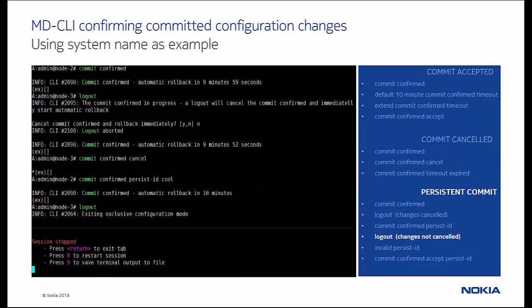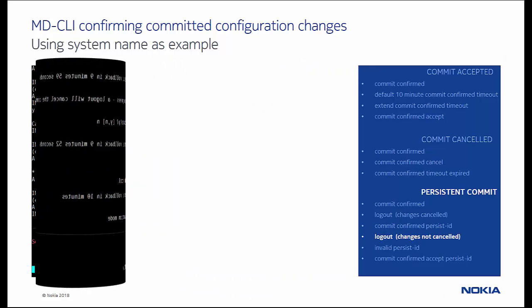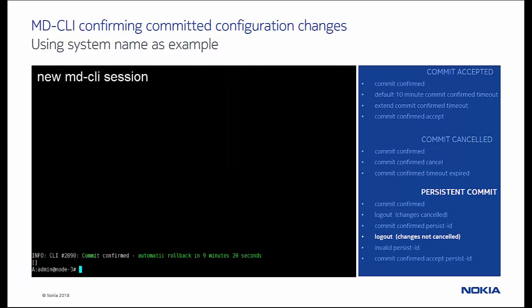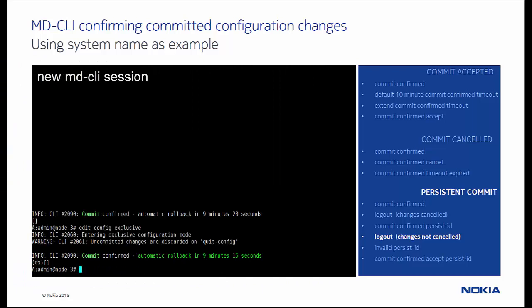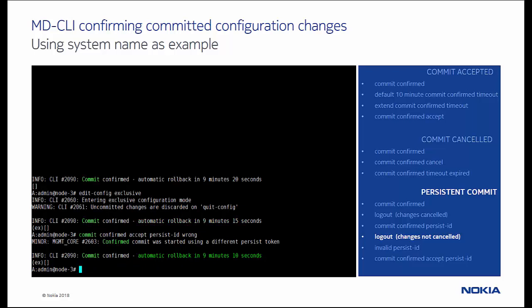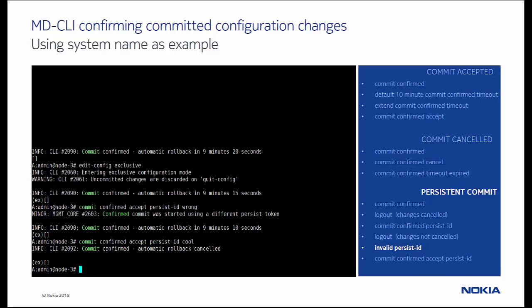The session logout does not abort the ongoing commit confirmed action anymore. In the new session, we enter the configuration mode using the edit config exclusive command, and notice that the confirmation timer is still running. Notice that the accept command fails using persist id with the name wrong, since the confirmed commit was started using a different persist token. Using the correct persist id makes the committed changes permanent.